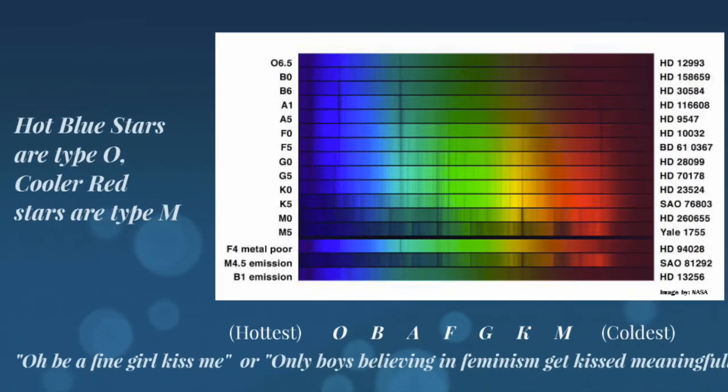And this was first studied in the 19th century, and a lot of the work was done by a group of women at Harvard College. And this group of women were called the calculators and were very helpful in developing this field of astronomy. And they've categorized the stars by their spectral lines.